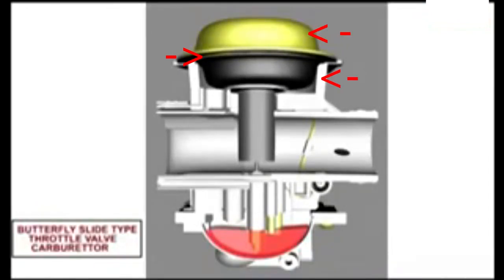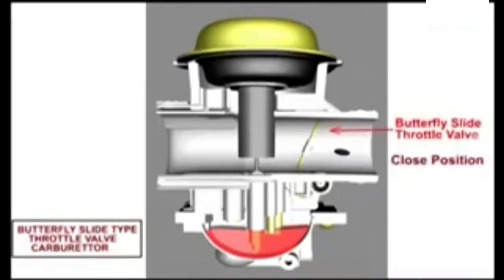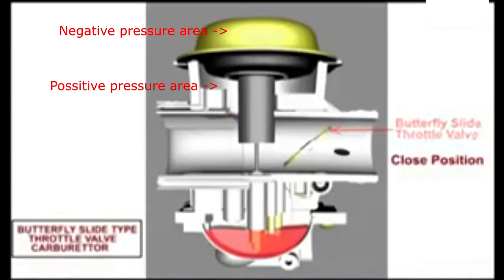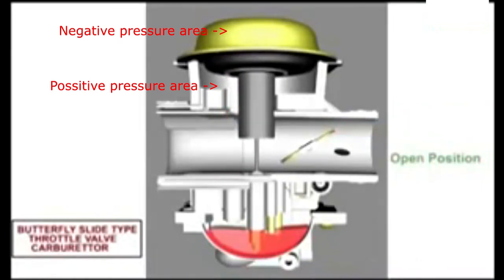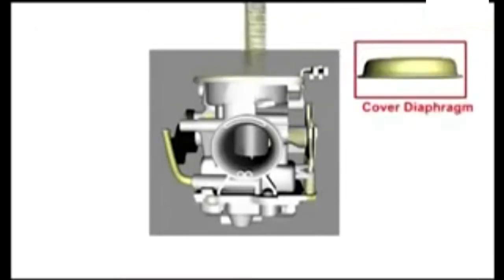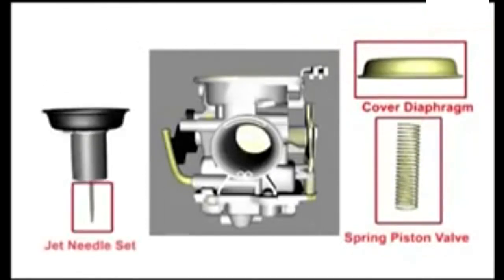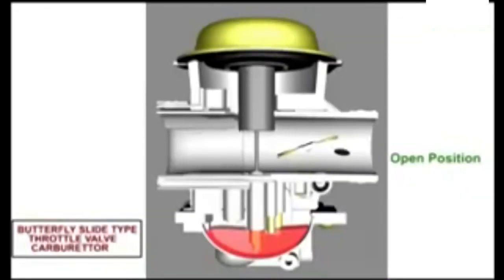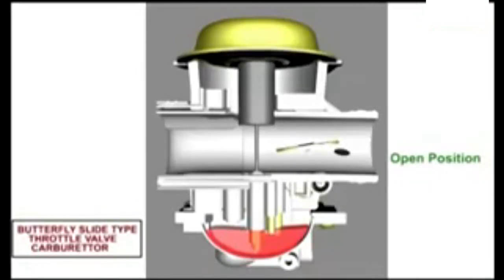A tight, airtight seal must be maintained for proper operation. Also, the integrity of the rubber diaphragm must be intact — it cannot be deteriorated, have holes, tears, cuts, or be generally hard or inflexible from age. The parts unique to a BS or CV style carburetor are the diaphragm cover, the spring, and the diaphragm slide and jet needle assembly. Symptoms of a faulty diaphragm can be sluggish performance, erratic throttle response, and poor wide-open throttle or high-speed performance.